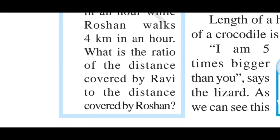Ravi walks 6 km in one hour while Roshan walks 4 km in one hour. We have to find the ratio of both. Now let's do this.